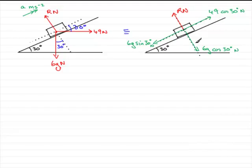And one's going to act in towards the plane. I've got that slight angle, but if you can see that it's meant to be straight into the plane. It will be 49 sin 30 degrees, and that would be in newtons. So they're the forces acting on the particle.